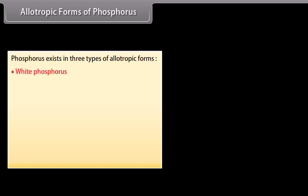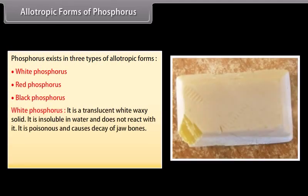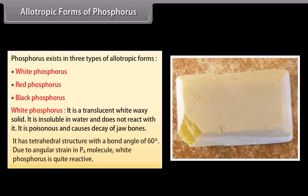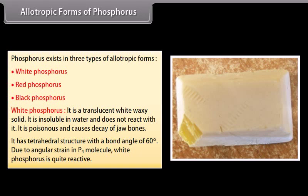White phosphorus is a translucent white waxy solid, insoluble in water, poisonous, and causes decay of jaw bones. It has a tetrahedral P4 structure with a bond angle of 60 degrees. Due to the angular strain in the P4 molecule, white phosphorus is quite reactive.